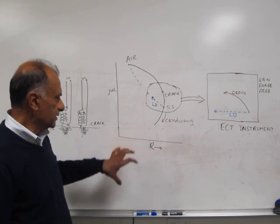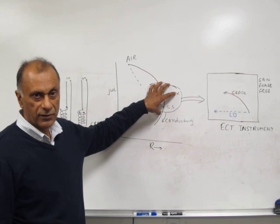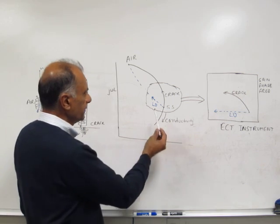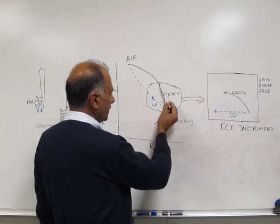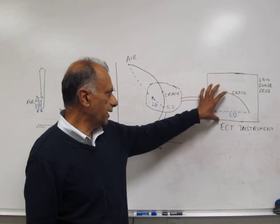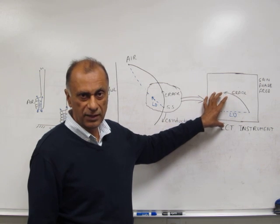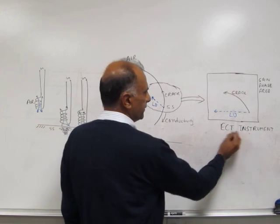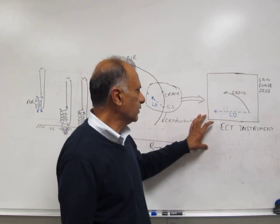For eddy current testing, we take the small display and transfer it to the eddy current instrument display shown in this figure. The lift-off line is here and the crack line is here. We change the phase angle on the machine to bring the lift-off angle to zero degrees, and when that's done, the crack signal is displayed accordingly.